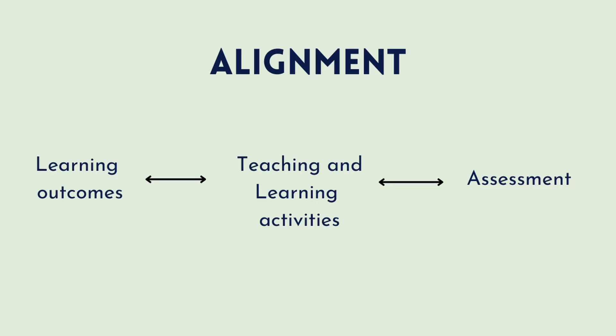Constructive alignment is all about ensuring that your learning outcomes, your teaching activities and your assessments are in sync. It's called 'constructive' because it draws on the teaching theory that ensures students are constructing their own learning. It's called 'alignment' because it makes sure everything aligns in your module — from the learning outcomes right through to the assessment.